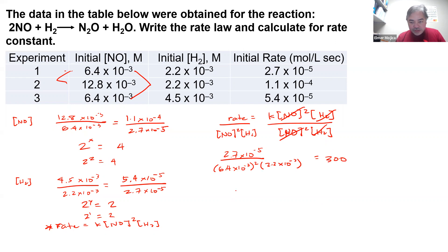Now if I use the other one, 1.1 times 10 to the negative 4 divided by 12.8 times 10 to the negative 3 squared times 2.2 times 10 to the negative 3, so I put the square there, you will get around 305.